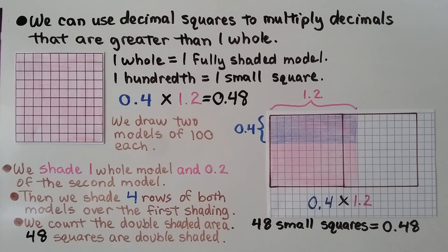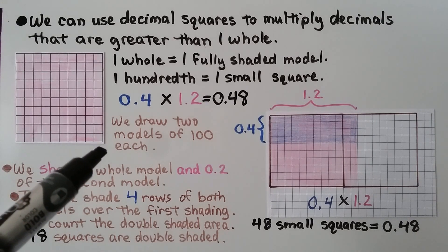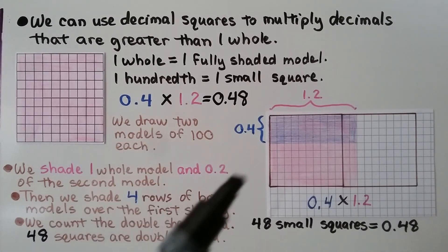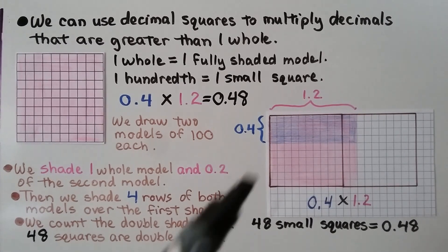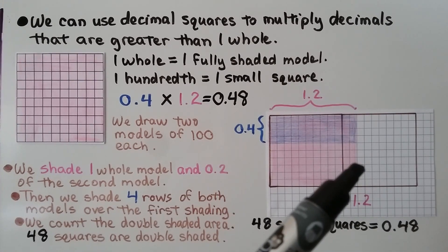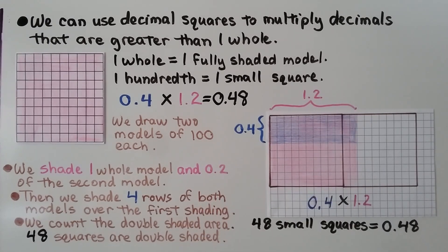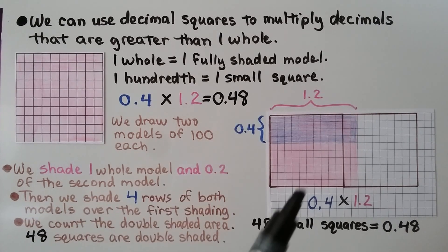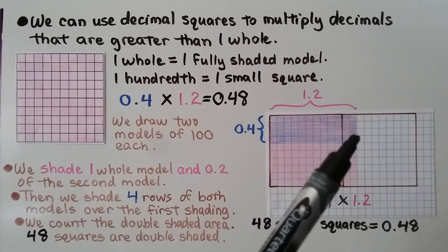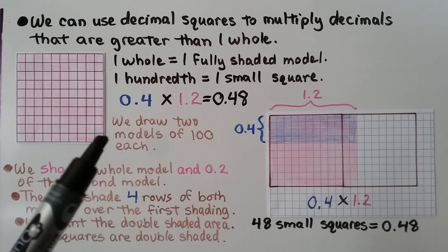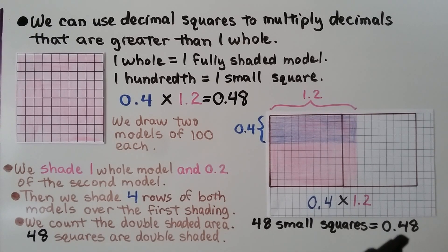We can use decimal squares to multiply decimals that are greater than one whole. One whole equals one fully shaded model, and one hundredth is one small square. For 4 tenths times 1 and 2 tenths, we draw two models of 100 each — two 10 by 10 squares placed next to each other. We shade one whole model and 2 tenths of the second model. Then we shade 4 rows of both models going all the way to the end of the shaded columns. We count the double-shaded area: there are 48 squares, so the product is 48 hundredths.